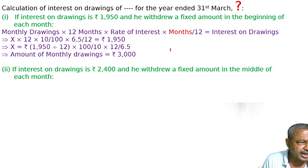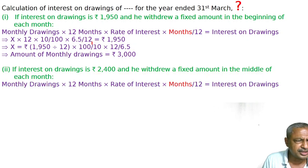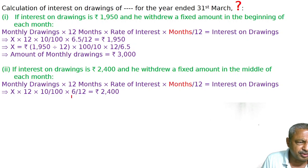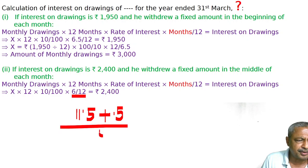In the second case, interest on drawings is 2400, and he draws a fixed amount in the middle of each month. The average months factor is 6/12, i.e., 6 months. This is because the first withdrawal is on April 15th, which is 11.5 months from 31st March, and the last drawing is on 15th March, which is 0.5 months. So (11.5 + 0.5) divided by 2 equals 12 by 2, that is 6 months.